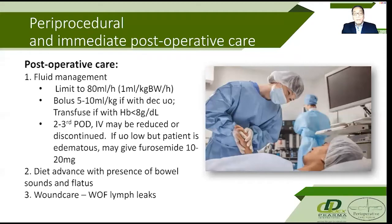If the hemoglobin is less than 8 grams per deciliter or hematocrit less than 25%, packed red blood cells should be transfused. Otherwise, volume replacement may be made with a bolus of 5 to 10 mL per kilogram of a balanced salt solution or Ringer's lactate solution.